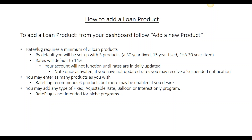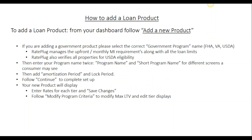RatePlug will have three initial products set up for you. You may add as many as you wish — we recommend anywhere from four to six. We also recommend that you add products that you quote the most often. So if you write a number of VA loans, make sure your VA products are added. If you write a number of ARMs, make sure those ARM programs are in there.